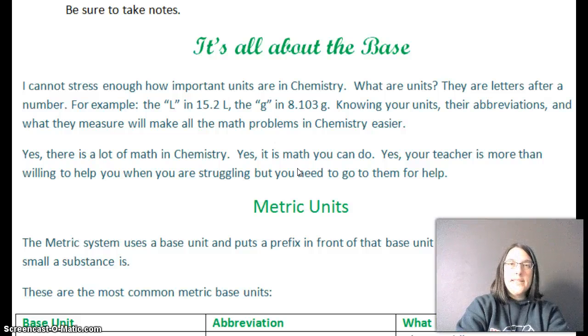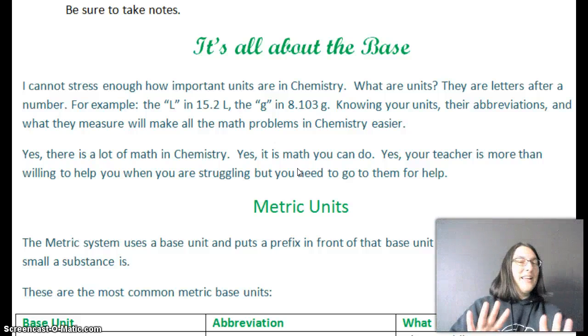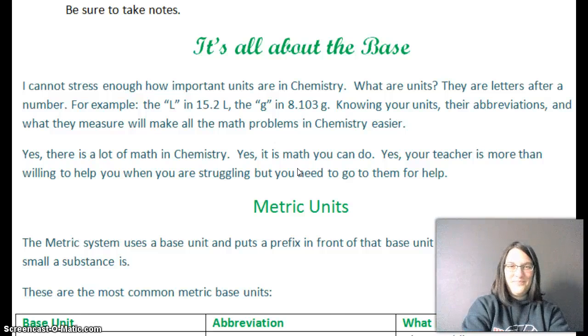What are units? They are the letters after a number. For example, the L in 15.2 L. What does the L stand for? Liters. The G in 8.103 G. What does the G stand for? Grams. So the units tell you what the number is measuring. They always go after the number. Knowing your units, their abbreviations, and what they measure will make all the math problems in chemistry easier. Right now, it probably feels like whatever, it's one more thing. But in second semester, we're hitting the math hardcore. And if you know your units, you're already one step ahead on all the math.